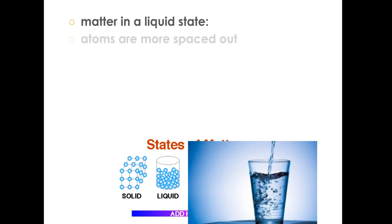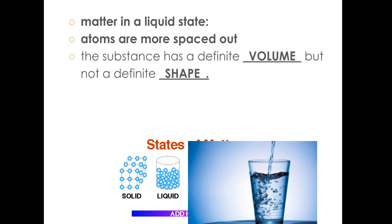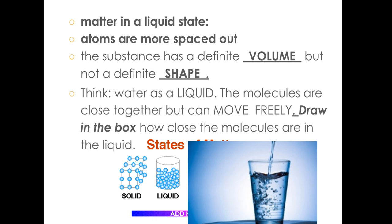Let's move on to the liquid state. In a liquid state, the atoms are more spaced out. The substance has a definite volume, so you can put it in a container and it will have a definite volume. But it does not have a definite shape. So if I dump that water on the table, it's just going to go all over the table. Or if I take that cup that is in the picture and I put it in a different size cup, it's going to take up the shape of that new cup we put it in. Think about this. Water is a liquid. The molecules are close together, but they can still move freely. So draw in the box how close the molecules are in the liquid. So on your green notes, draw what you see in the green box in the picture spot. And make sure you include the information about liquid state.